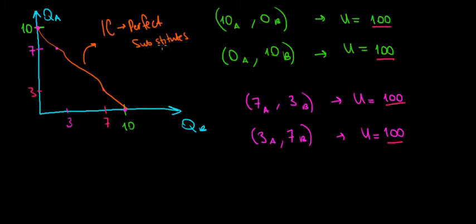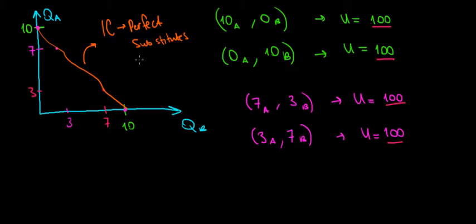It could also be a different exchange rate — for example two to one, where we prefer equally one banana for two apples. But the simplest example to understand the intuition is the one-to-one case. Remember, this would be a straight line — I just couldn't draw it perfectly. The indifference curve is indeed a line and not a curve because we are treating both goods equally.